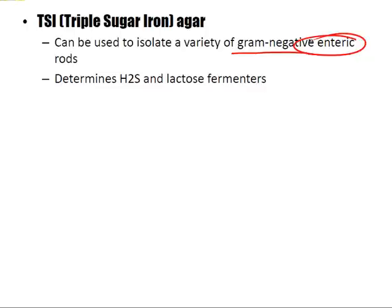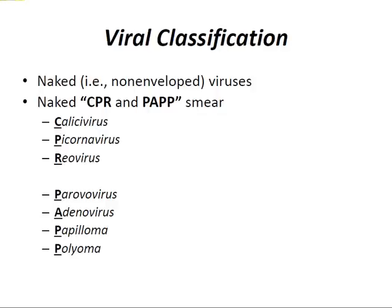For viral classification, naked or non-enveloped viruses can be remembered with CPR and PAP. CPR stands for calcivirus, picornavirus, and reovirus — these are RNA viruses. PAP stands for parvovirus, adenovirus, papillomavirus, and polyomavirus — these are DNA viruses.